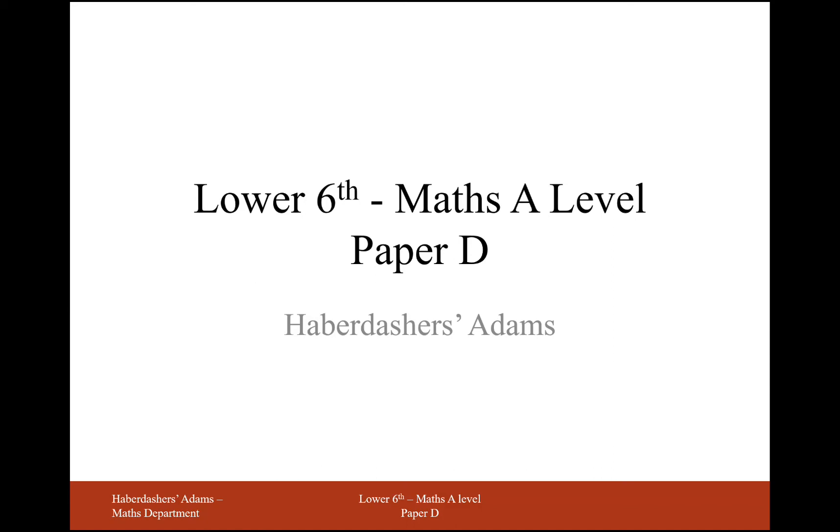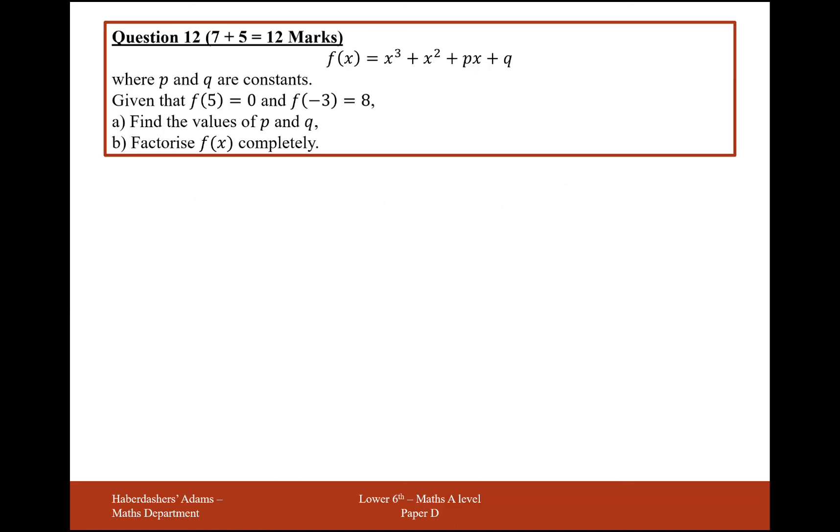Hello there and welcome to Lower Sixth Maths A Level Practice Paper D. Here we're working on question 12. So question 12 asks us to find the value of p and q, given that f of 5 equals 0 and f of minus 3 equals 8.